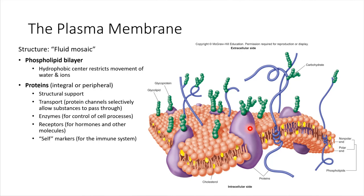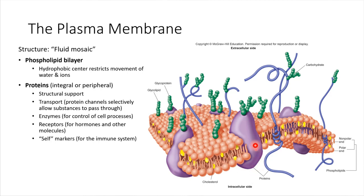Proteins can be one of two types: integral or peripheral. This refers to whether the protein spans the entire membrane. An integral protein goes all the way from one side of the plasma membrane to the other — it's integral.